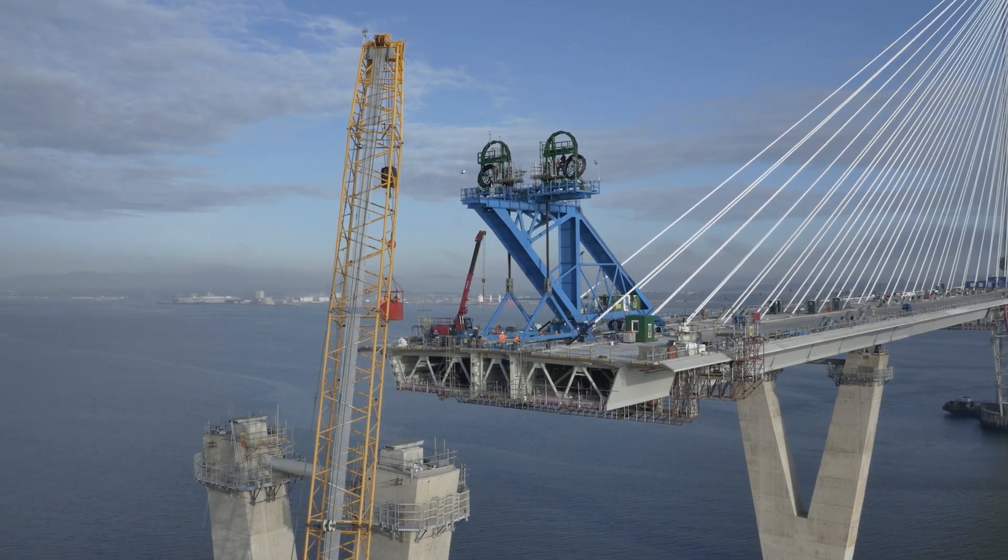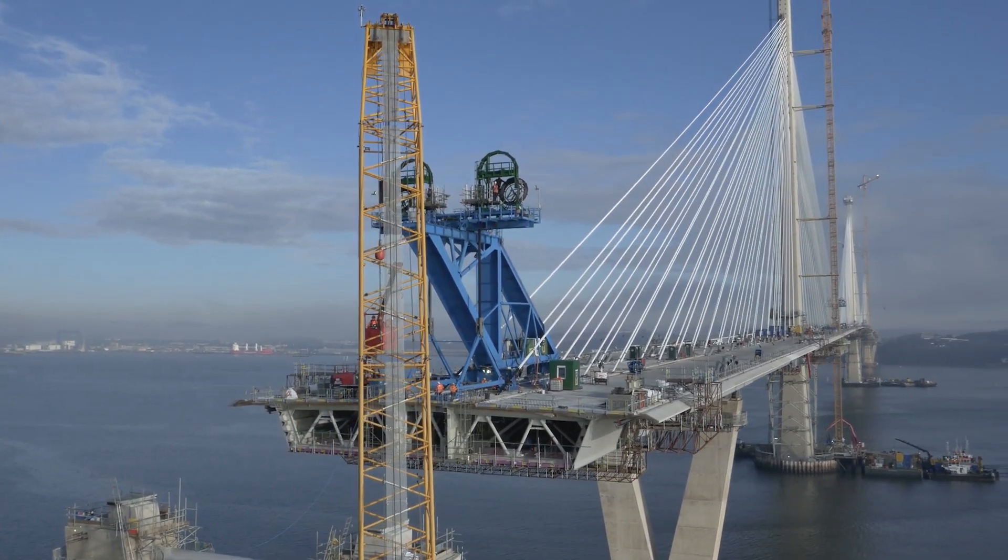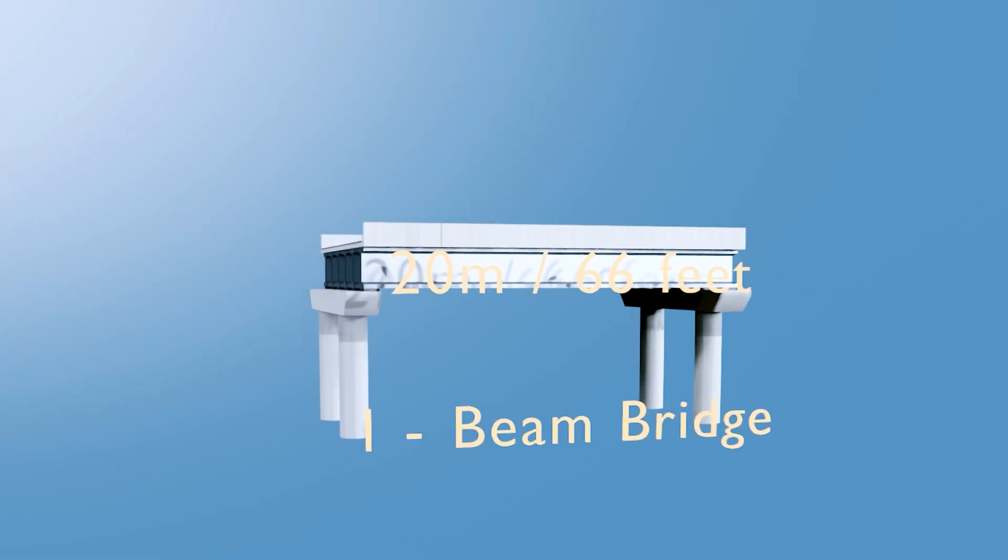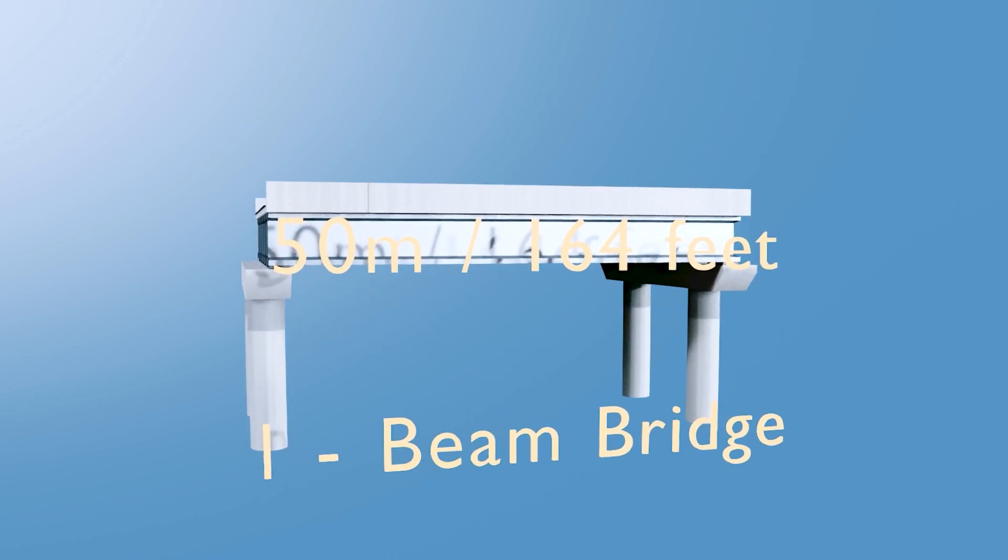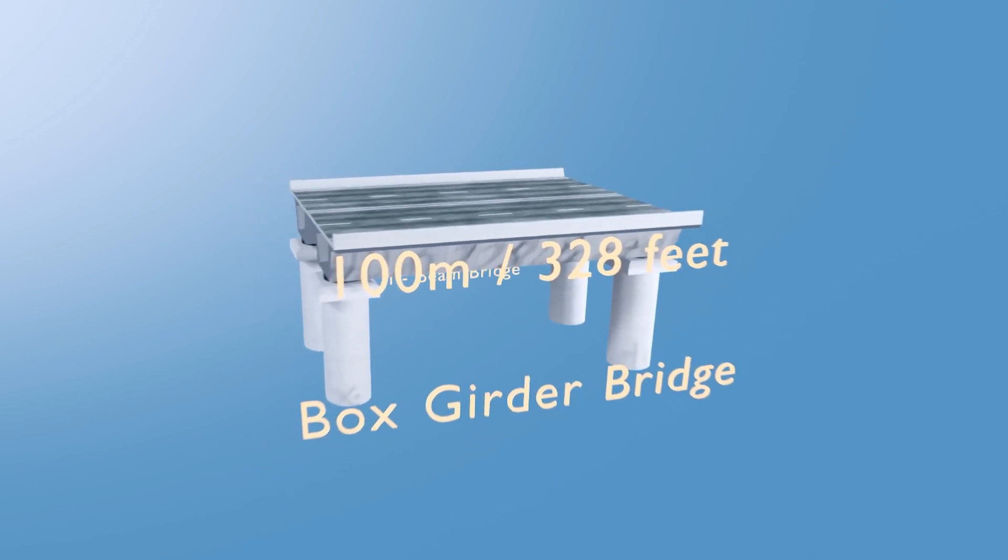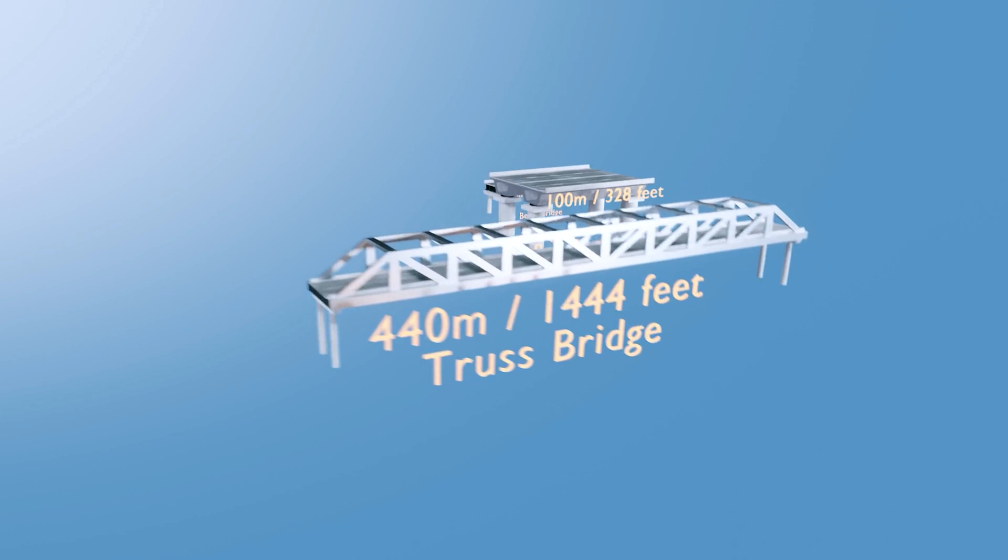Advancement in engineering and construction techniques continue to push the boundaries of bridge design, resulting in the construction of longer and more impressive main spans over time. While I-girder bridges can go anywhere from 20 to 50 meters, box girder bridges can reach up to 100 meters. While steel truss bridges can go from 75 to 440 meters, cable-stay bridges with box girders can reach up to 1000 meters.